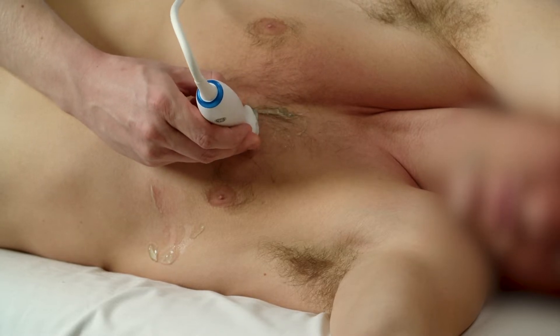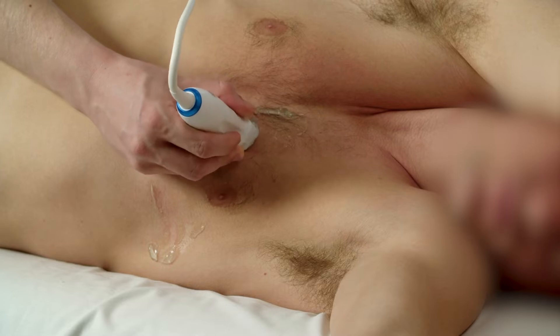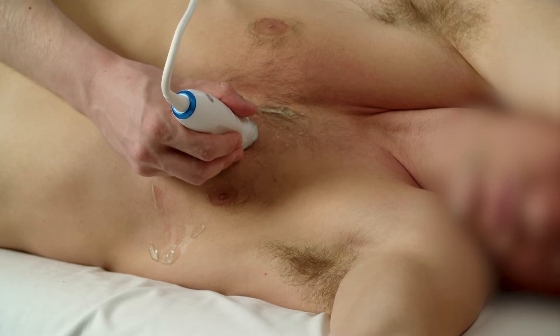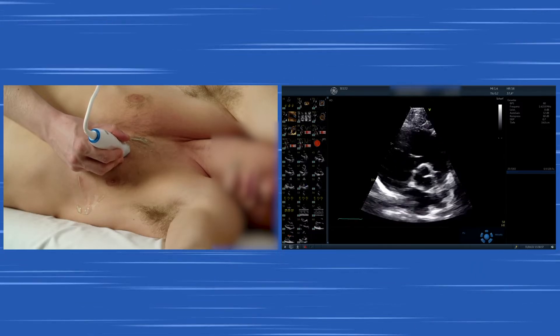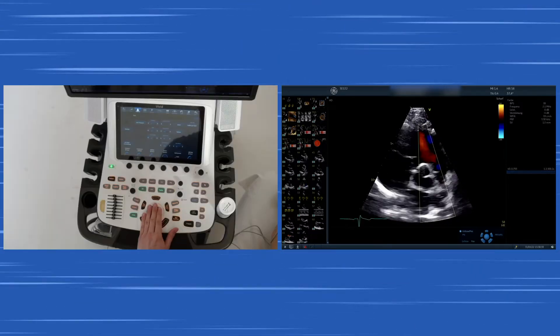You rotate while seeing the aortic valve to the left shoulder of the patient and then you achieve a parasternal short axis view at the level of the aortic valve. That's nicely visualized in the center.